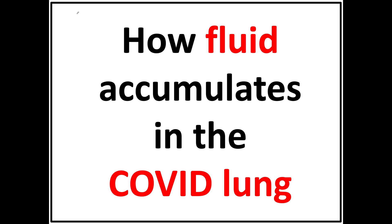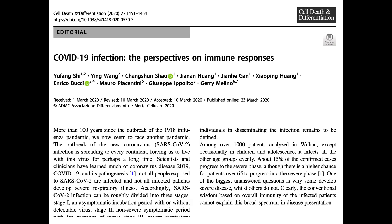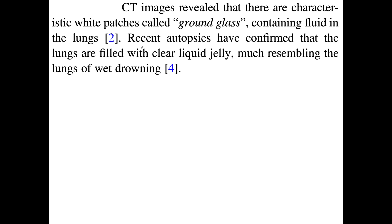In this video I'm going to talk about how fluid accumulates in the COVID lung. This is a paper published recently in 2020 that gives important anatomy and describes the nature of fluid accumulation. CT scan images revealed characteristic white patches called ground glass containing fluid in the lungs. When people die and autopsies are performed, this fluid is found to be a clear liquid type of jelly, much resembling the lungs of wet drowning.